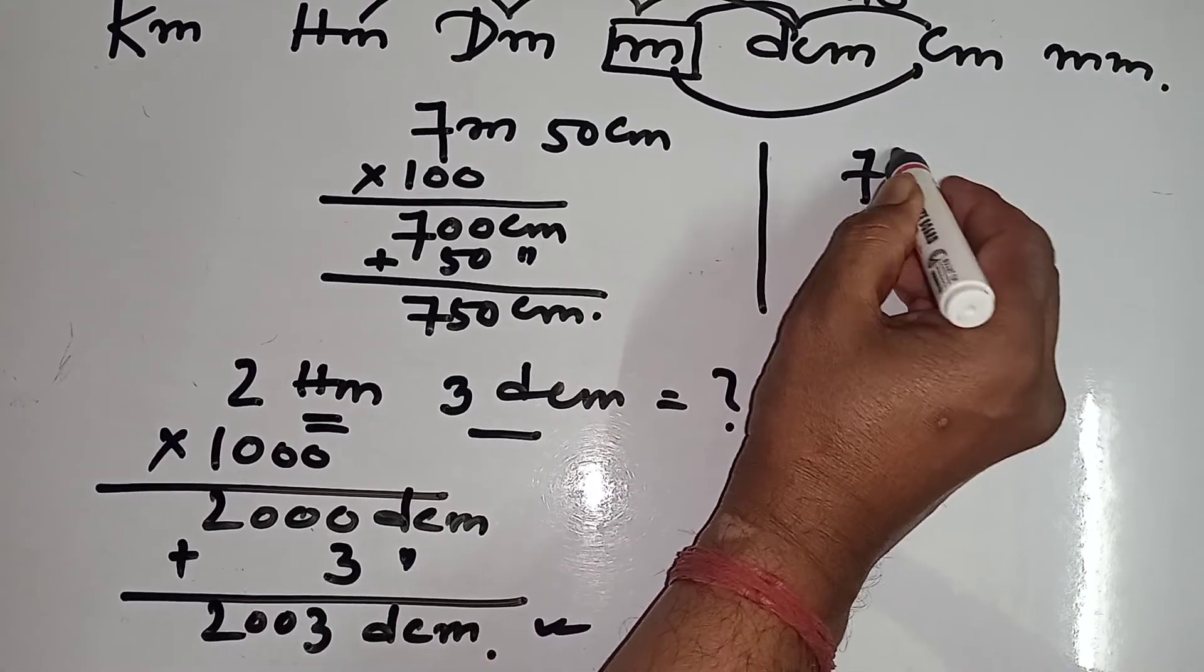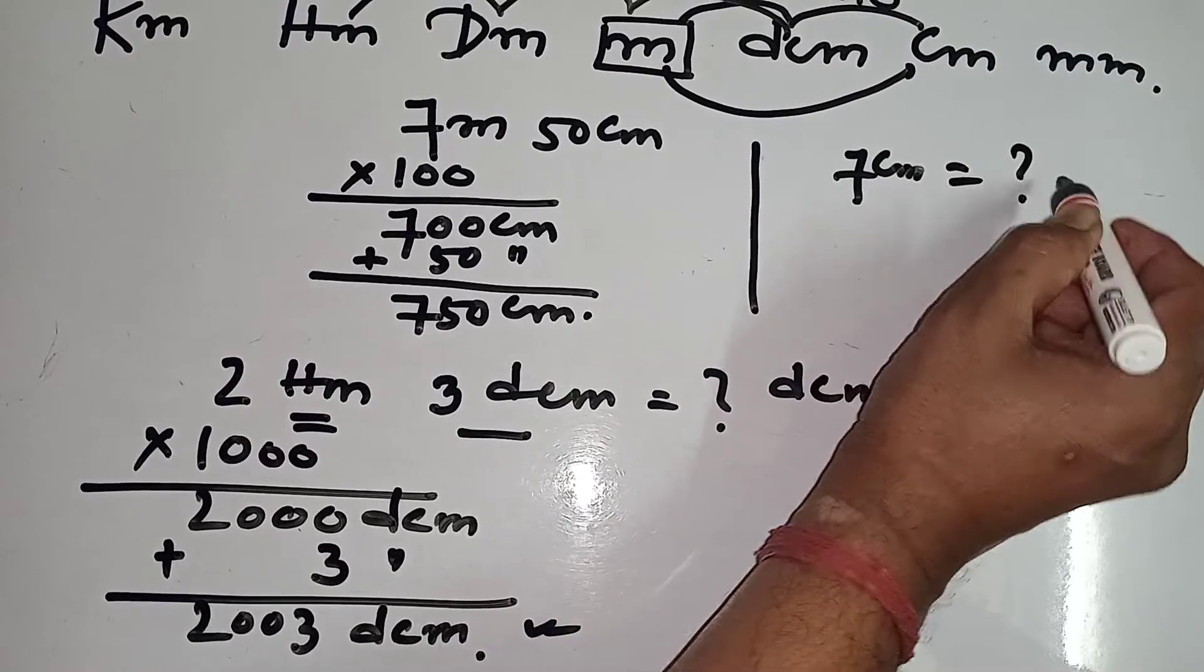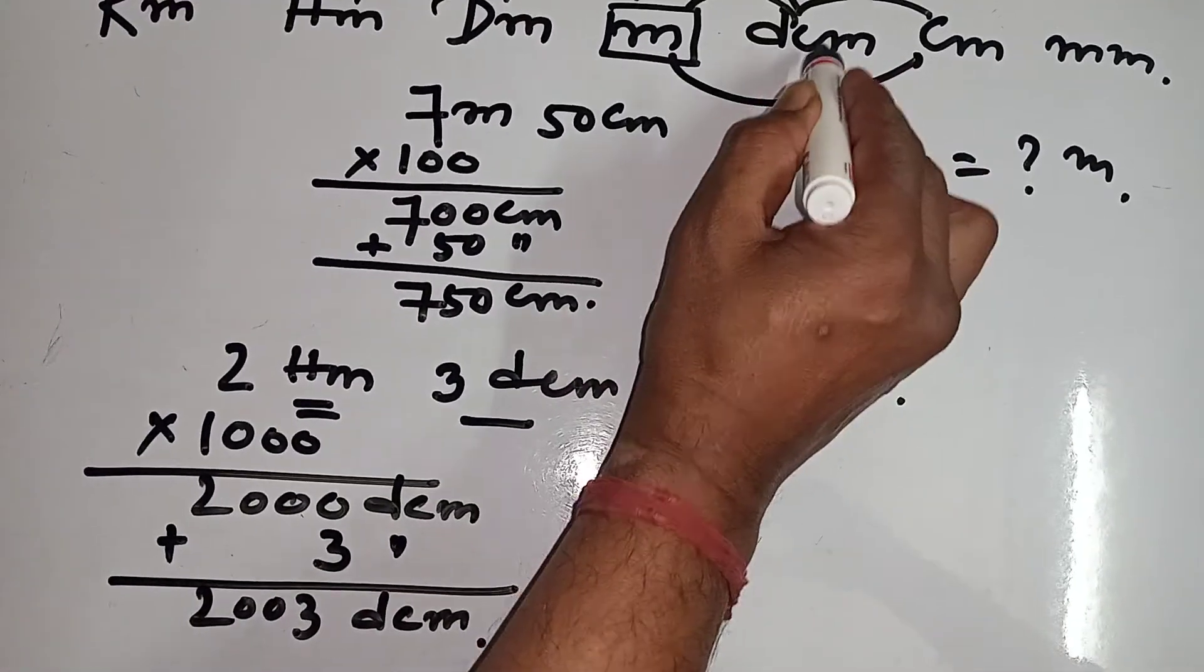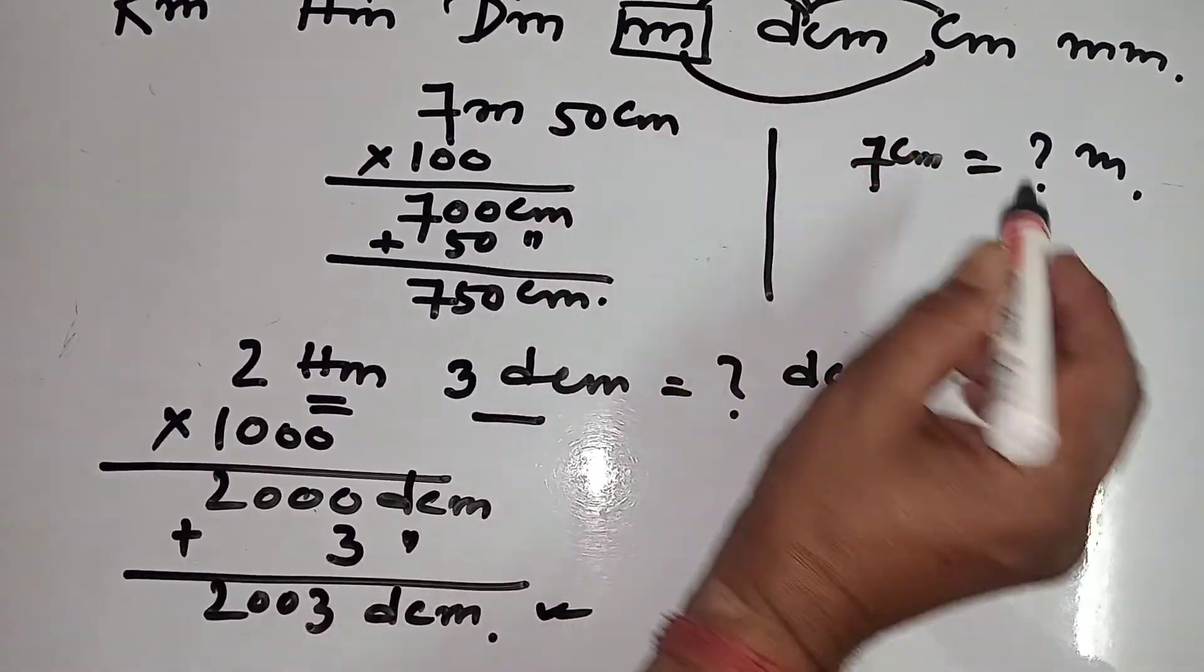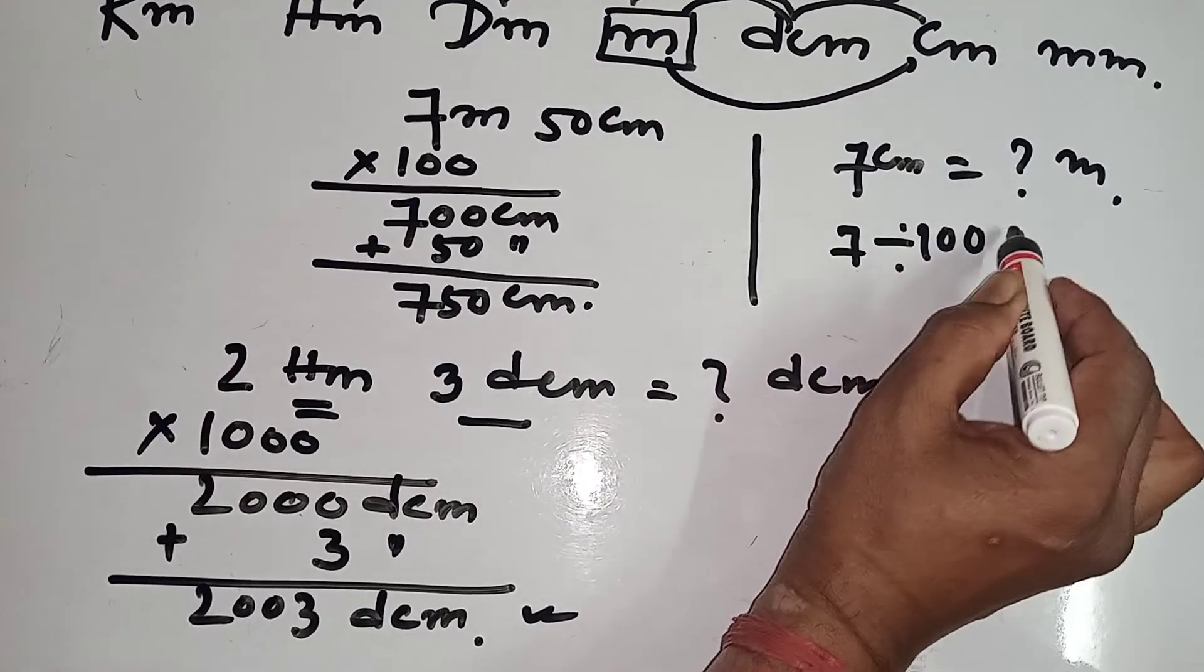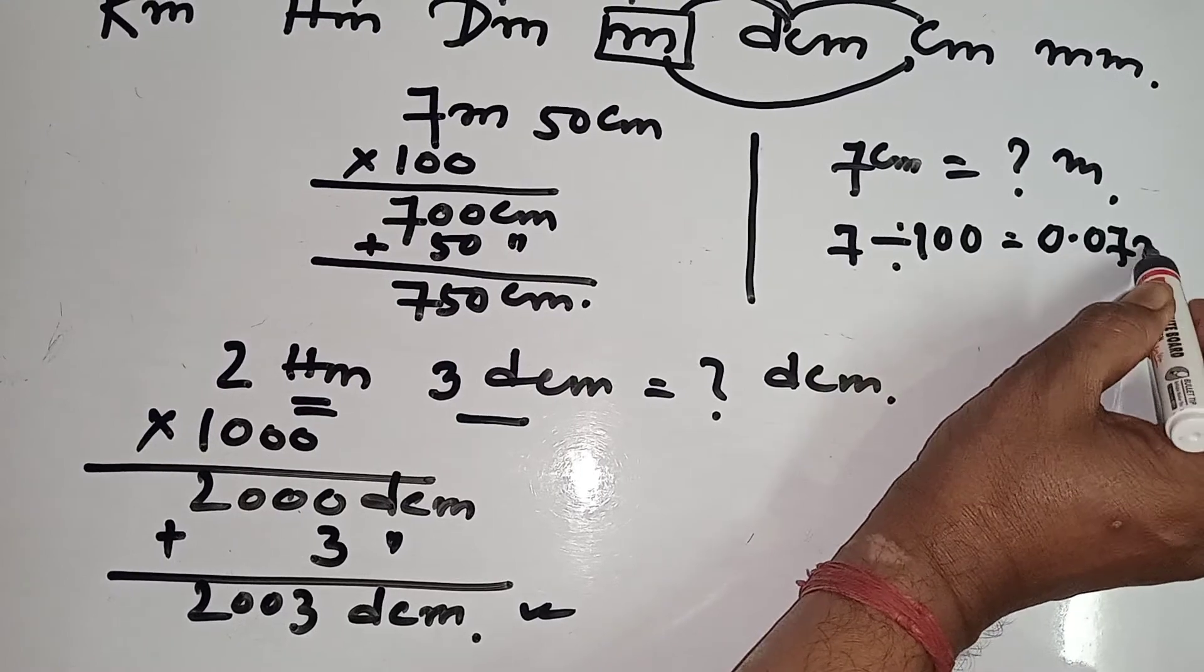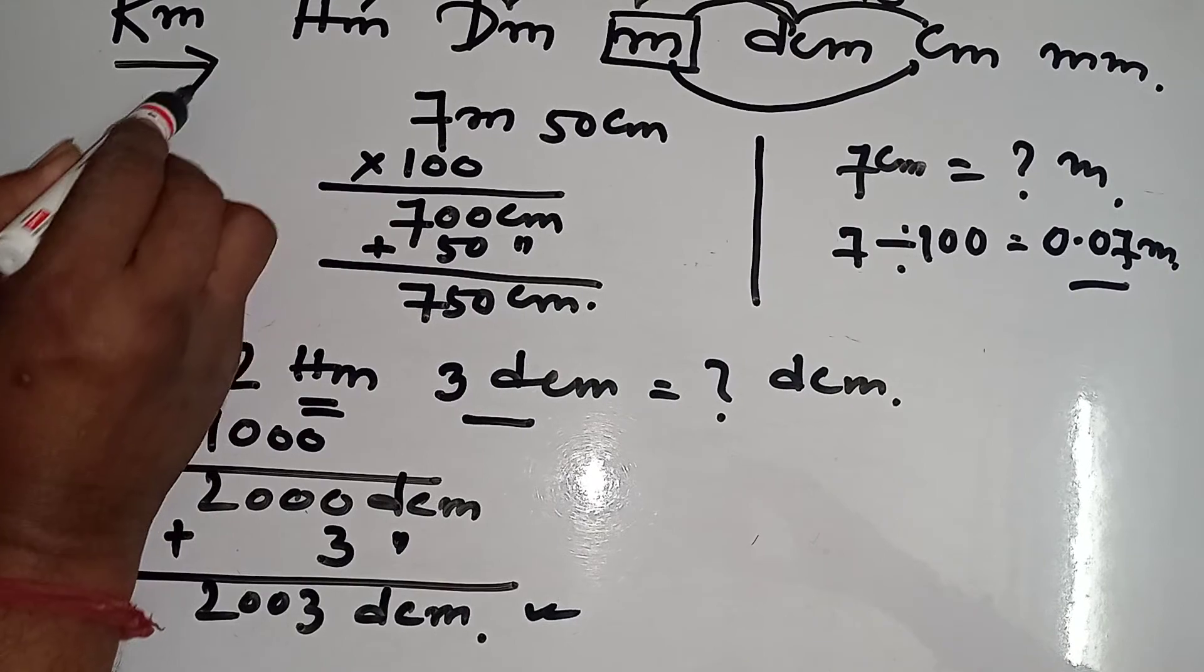7 centimeter equal to how much meters? 7 centimeter, that means this, this 10 into 10, that is 100 divided by 100. That means 7 divided by 100, that means 0.07 meters only.